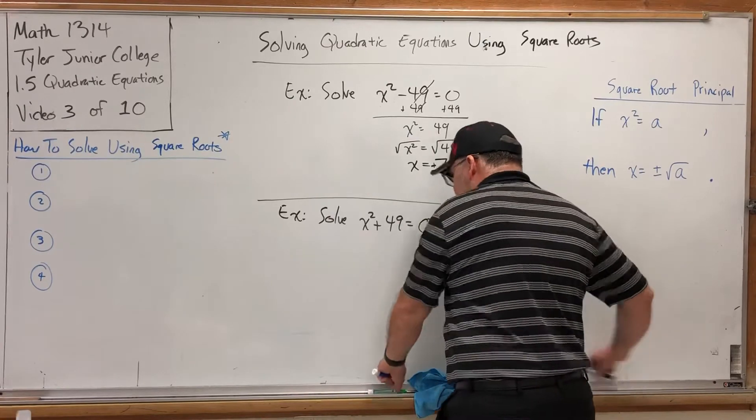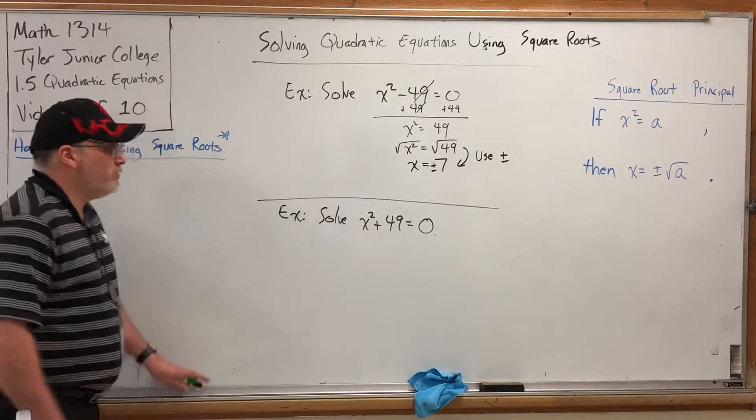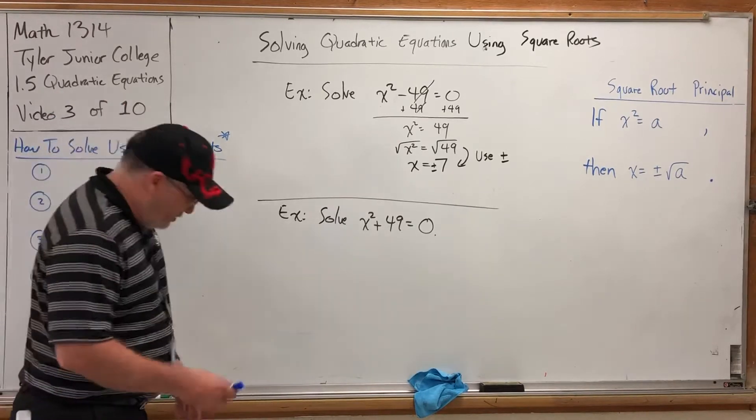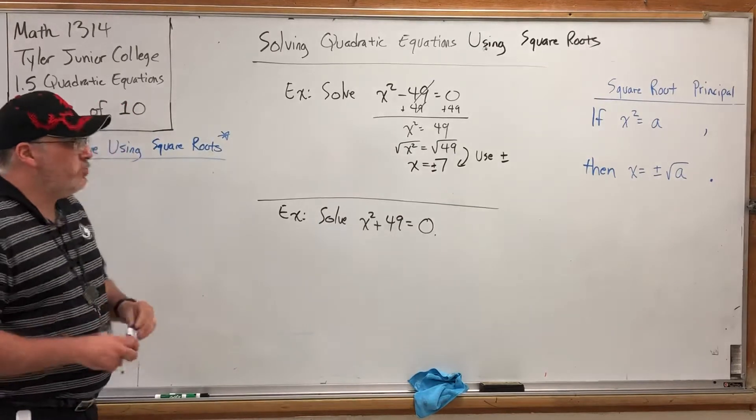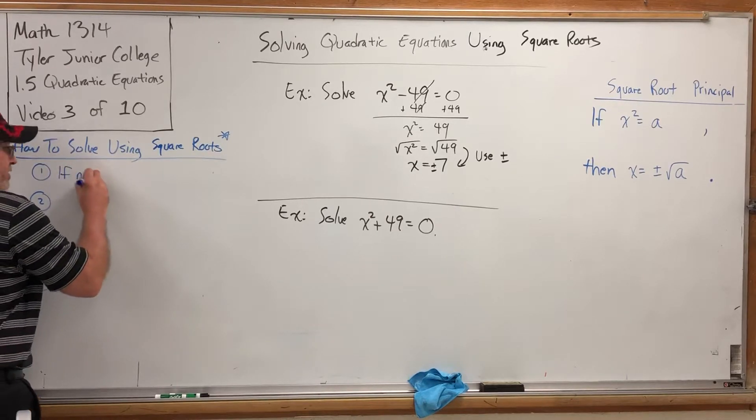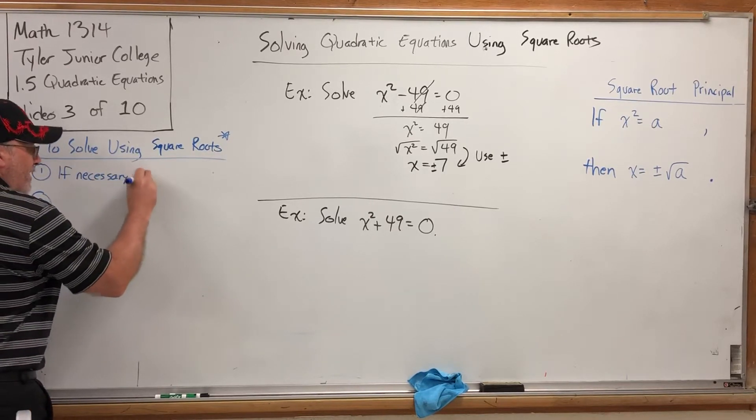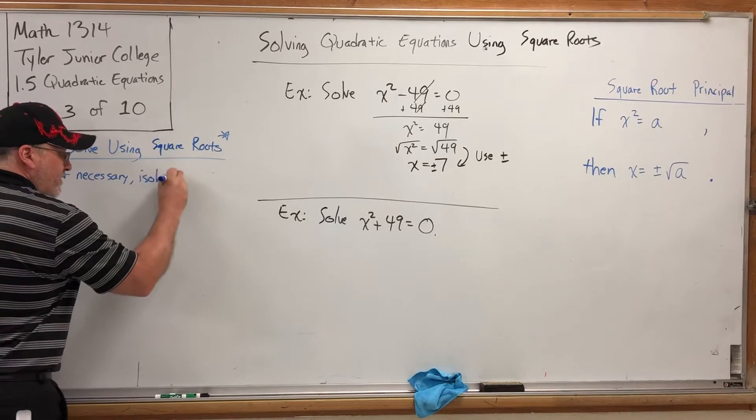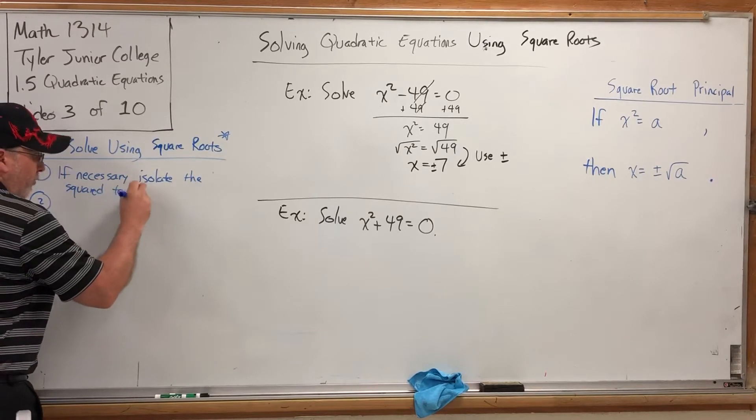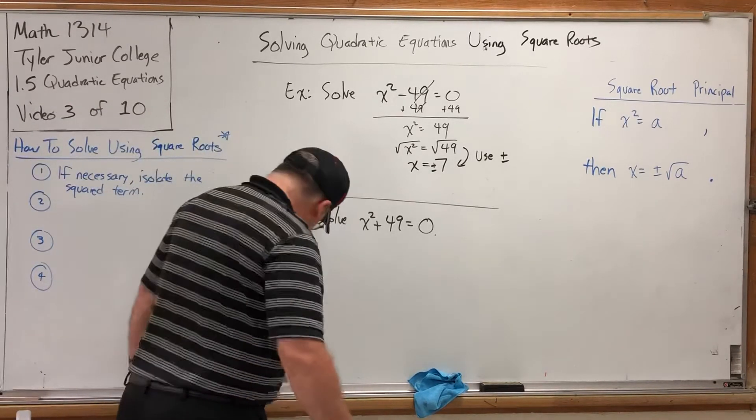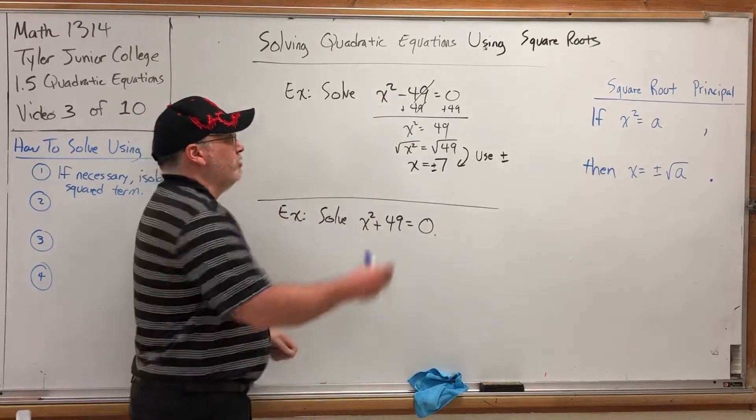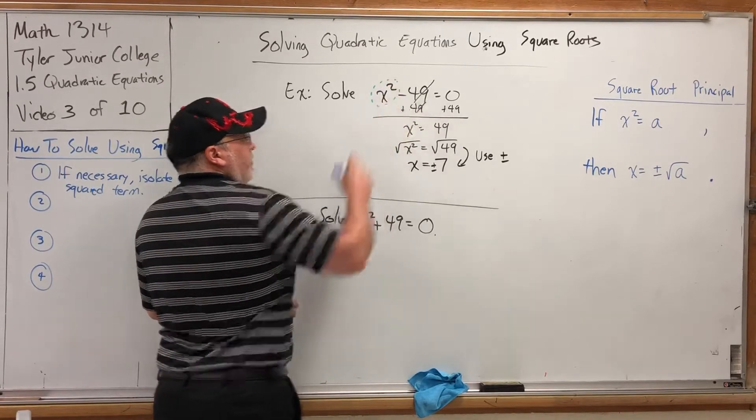So, what are our steps? Well, let's see if we can categorize what happened. Why did we add 49 in the beginning? There's a lot of ways to answer that, but one way to answer it is we needed to isolate the squared term, and that's the first step. I should say, if necessary, isolate the squared term, because there will be some problems where it is already isolated, so you can go to step two. By squared term, I mean whatever has the square on it. In this case, the square belongs to the x. So, that's the squared term that we isolated.